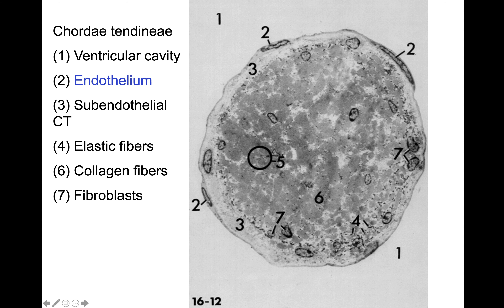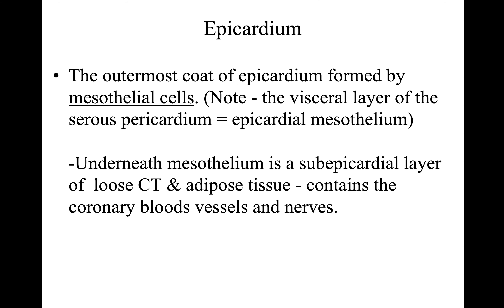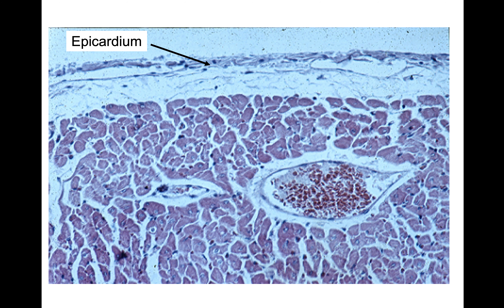The outermost layer of the heart is the epicardium, formed by mesothelium cells. This layer is composed of the epicardial mesothelium along with sub-mesothelial connective tissue. Looking at the slide, we can see the mesothelium and beneath it the sub-mesothelial connective tissue, which may contain loose connective tissue and white adipose connective tissue.